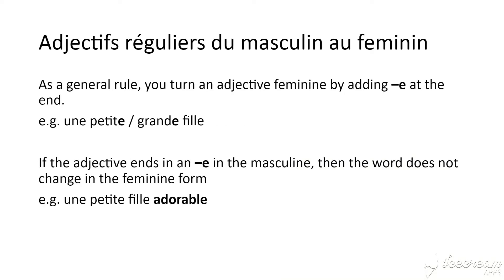So let's start with the easy ones — regular adjectives from masculine to feminine. As a general rule, you just add an E at the end of the adjective. So, un petit garçon would become une petite fille. Un grand garçon would become une grande fille. If the adjective already ends in an E, then you just don't do anything — you leave it as it is. Un petit garçon adorable, une petite fille adorable. So nothing changes here.